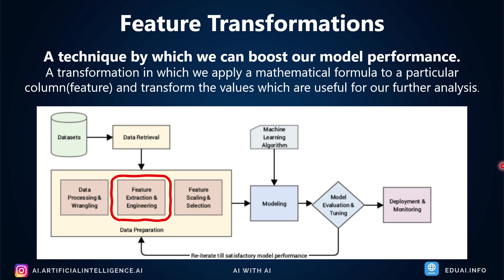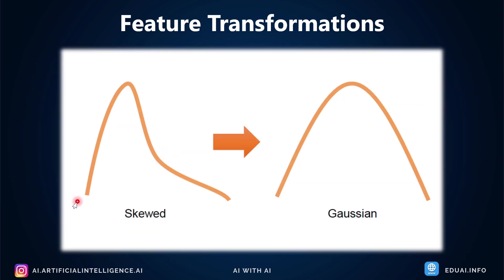Let me give you an example. As you see in the image, the data is called skewed — it can be positively skewed or negatively skewed. The data we require needs to be Gaussian for most algorithms — linear regression and logistic regression. If your data is normally distributed, that is Gaussian data. Skewed data, whether highly positively or negatively skewed, means data is not normally distributed.